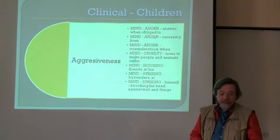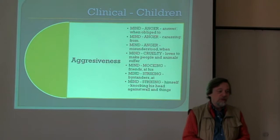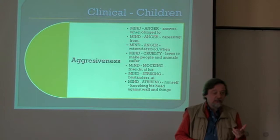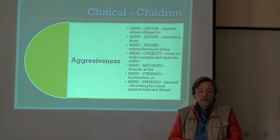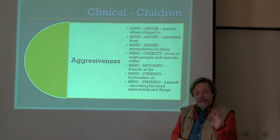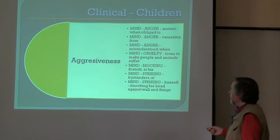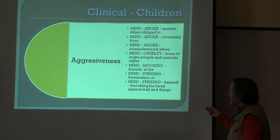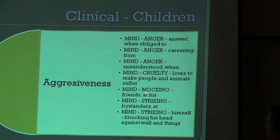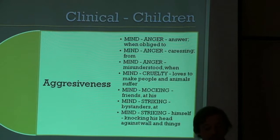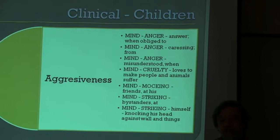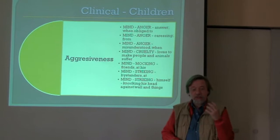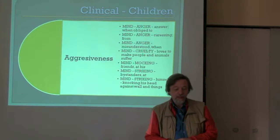The same approach was taken for children. An example is aggressiveness — an interesting case, because in the Synthesis repertory you must look to other rubrics to find aggressiveness: irritability, anger, desire to kill, et cetera. Roberto Petrucci took the different rubrics relating to aggressiveness in children — aversion to being caressed when misunderstood, cruelty to people and animals, mocking friends, striking bystanders, knocking his head against the wall. A nice set of rubrics was combined into one rubric, 'aggressiveness in children,' giving a clinically useful result.